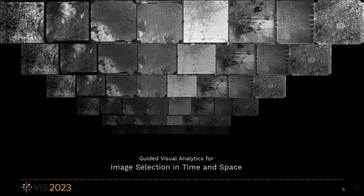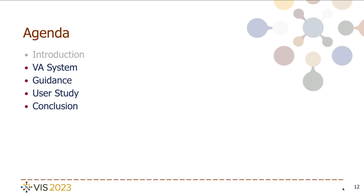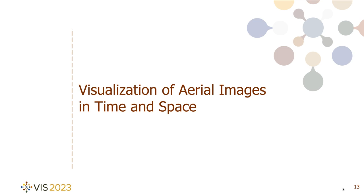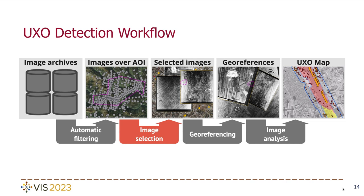So this is image selection for UXO detection in time and space. In this presentation I am going to talk about the VA system we have created, the guidance, and the user study. Many other things like our task analysis and domain characterization can be found in the paper. We designed and implemented a visualization to aid expert analysts in the task of image selection for UXO detection. Image selection is only one part of the whole UXO detection workflow — the actual bomb and crater detection happens later in the process.